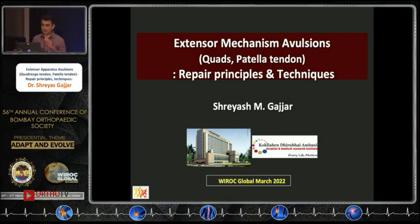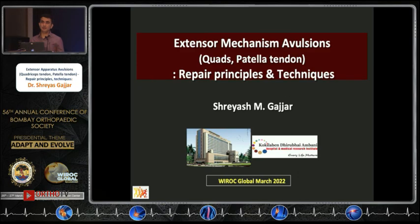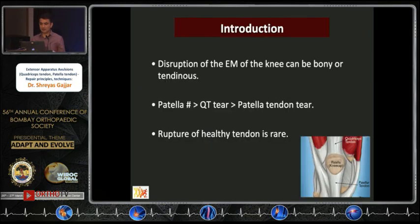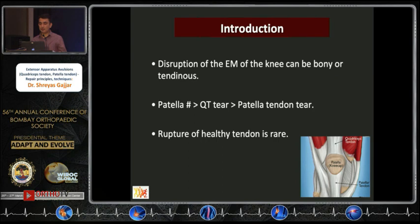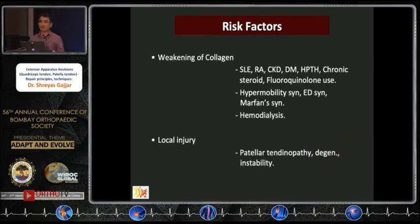Good morning, chairpersons and colleagues. Thank you very much for the invitation. My topic is extensive mechanism avulsion injuries which involve the quads and the patellar tendon. Disruption of the extensor mechanism of the knee can be either bony or tendinous. Patellar fractures are two to three times more common than quadriceps tendon tear, which is two to three times more common than patellar tendon tear. It is also recognized that rupture of a healthy tendon is generally rare.